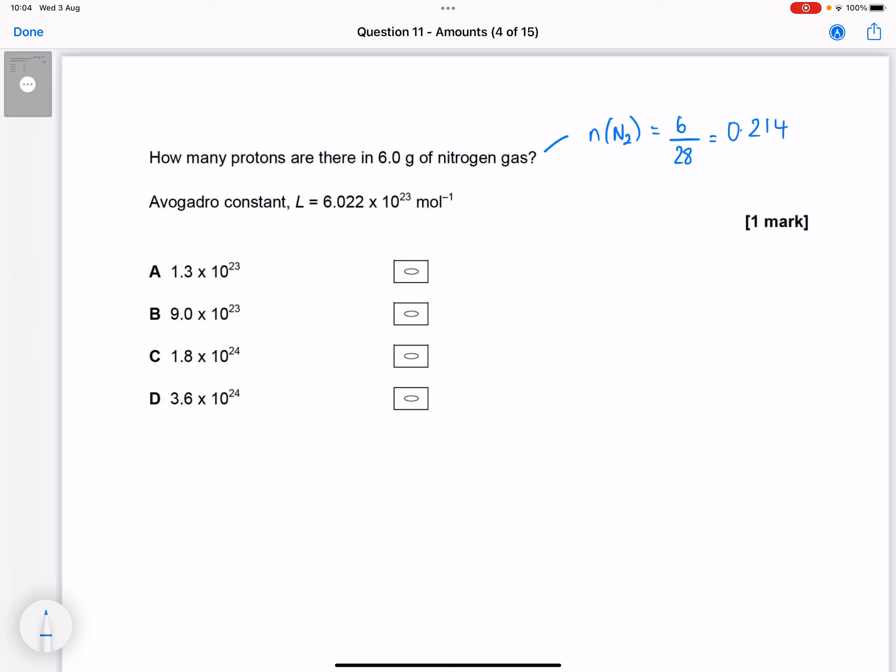Now, how many moles of protons is that? In a nitrogen atom, there are 7 protons, so in an N2 molecule, there would be 14 protons.